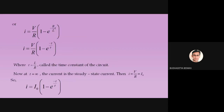We replace R/L·t with t/τ, where τ is called the time constant of this particular circuit, and the value of τ equals L/R. This is a very important result: τ = L/R is the time constant of the RL circuit.